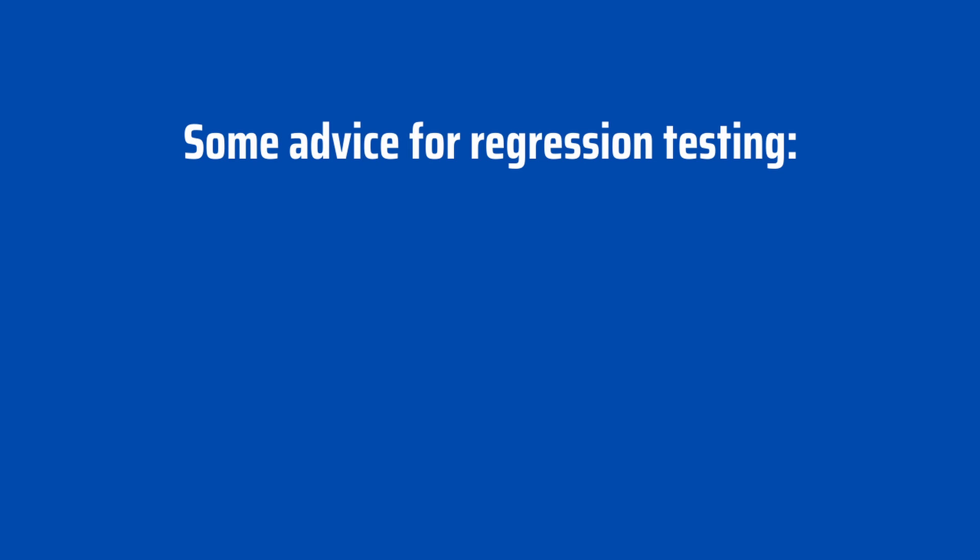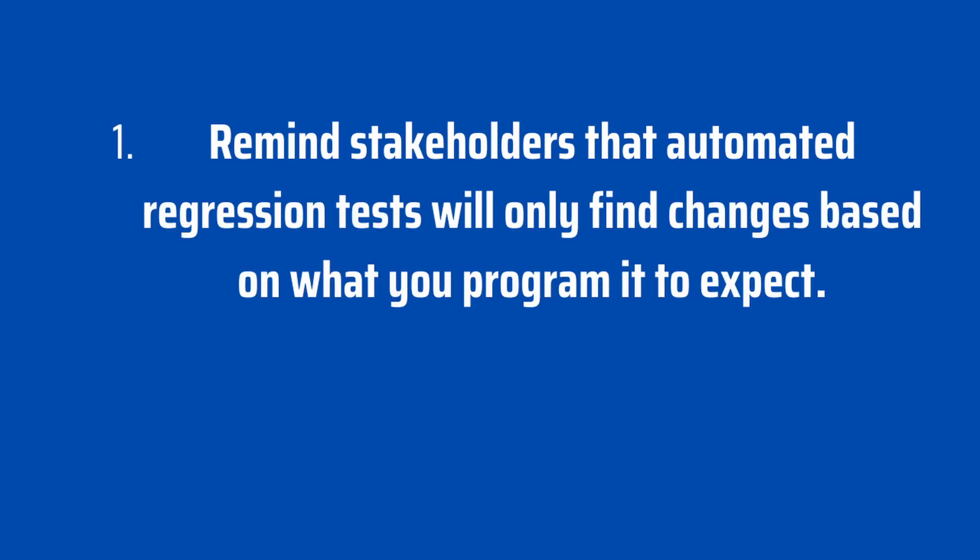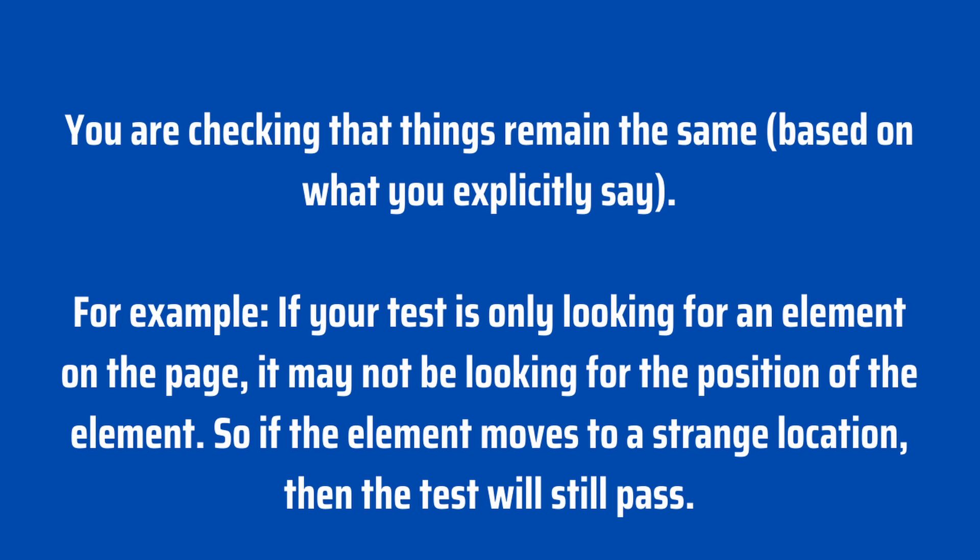Here is some advice for regression testing. First, I suggest that you remind stakeholders that automated regression tests will only find changes based on what you program it to expect — you are checking that things remain the same based on what you explicitly say. For example, if your test is only looking for an element on the page, it may not be looking for the position of the element. So if the element moves to a strange location, the test will still pass.